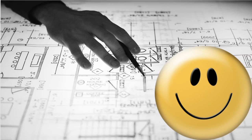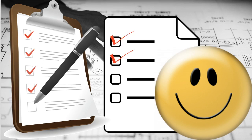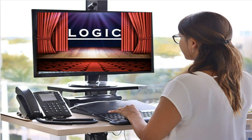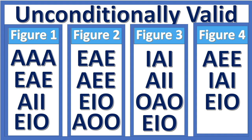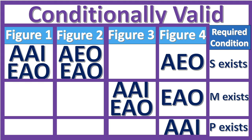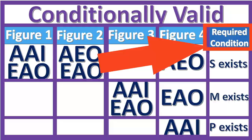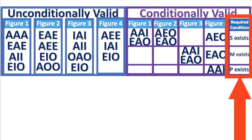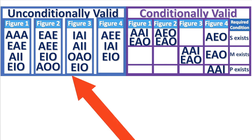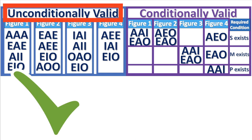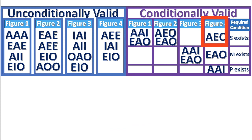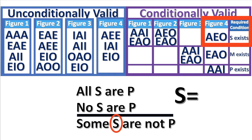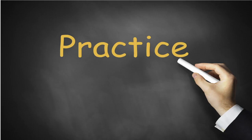Now that we know the form, we can check to see if it's valid. Fortunately, all the possibilities have already been checked for validity, and we know which combinations are valid and which ones are invalid. Here's a list of all the unconditionally valid forms, and here's a list of all the conditionally valid forms. The condition is that of the Aristotelian standpoint — if the form is on the conditional list, then it is valid if one of the terms represents actually existing things. If the form is on the unconditional list, then the syllogism is valid regardless of whether the term represents actually existing things. For example, the form A-E-O-4 is valid on the condition that S, the subject of the conclusion, represents actually existing things such as a cow, a cat, or a fish.